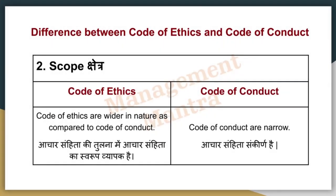Next, on the basis of scope: the Code of Ethics is wider in nature and more comprehensive compared to the Code of Conduct. The Code of Ethics includes the Code of Conduct, whereas the Code of Conduct is shorter and narrower in scope.